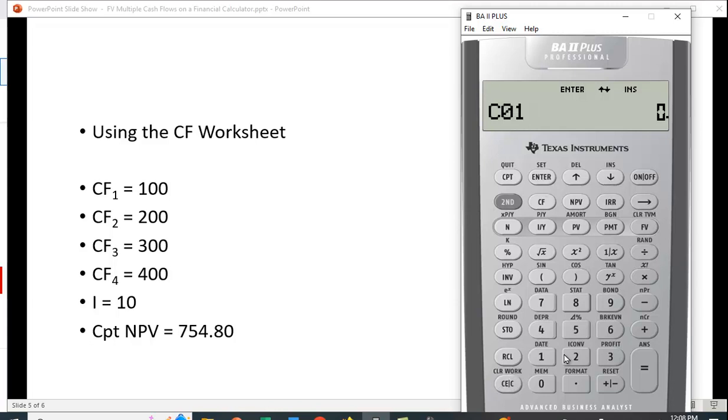So the first cash flow is 100, and make sure you hit enter so you see that equal sign. It only appears once so we just leave frequency as one. Second cash flow is 200, and again enter and leave frequency as one. Third cash flow is 300. Enter, and the last cash flow is 400.